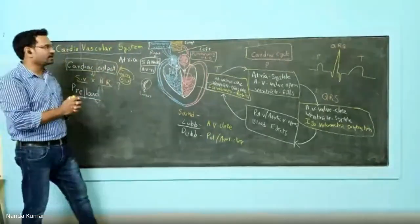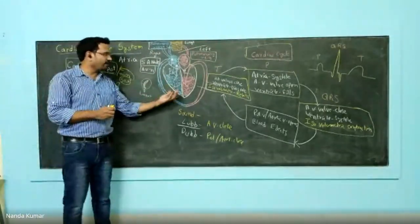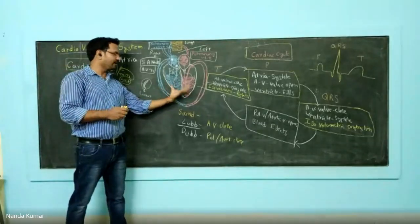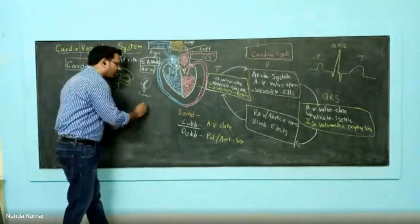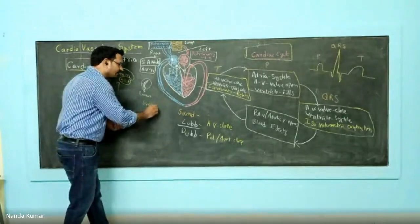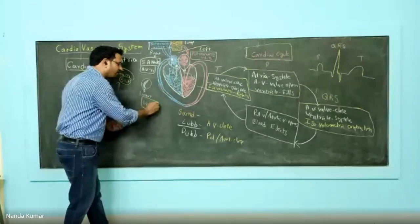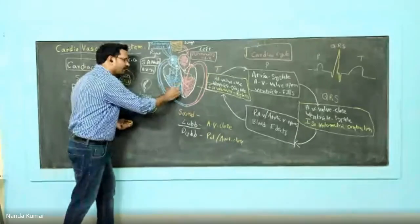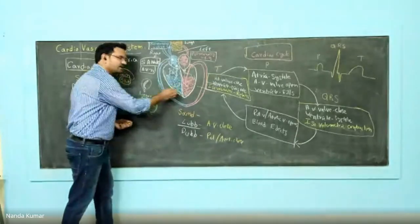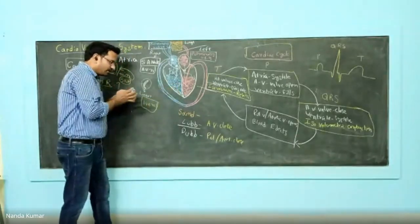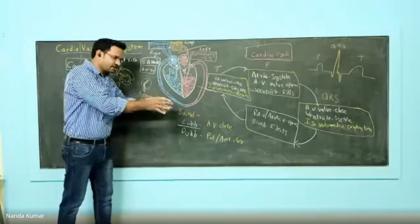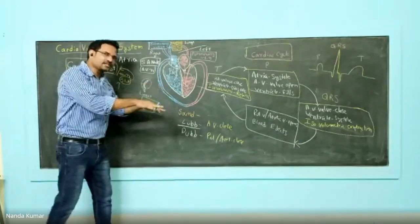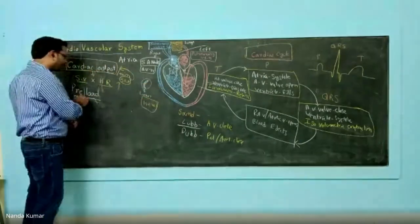Let us understand with respect to ventricles. Ventricles will undergo dilation. During that ventricular dilation, there will be 140 ml of blood. This 140 ml of blood puts some kind of pressure on the ventricular wall and causes some stretch. That stretch is known as preload.